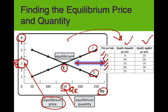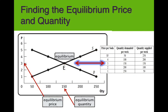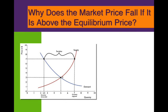What happens when the market price is above equilibrium? Why does the market price fall in that situation? Here's a diagram: if we were at equilibrium, we'd be at a price of $3 and a quantity of 5. But what if the price is $7? Now we're out of equilibrium.